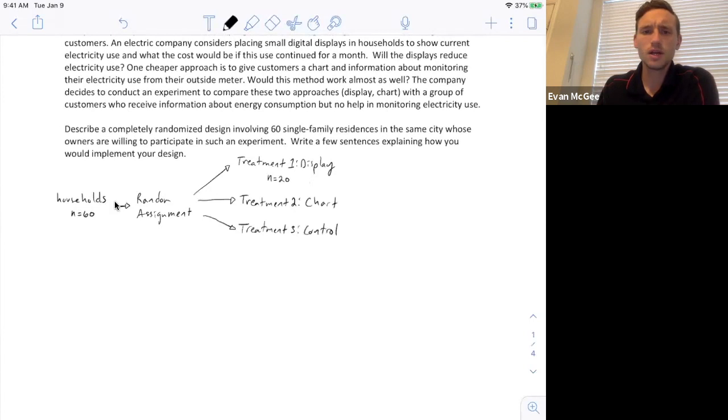So the first step, take our 60 single-family households and randomly assign them to the three treatments that we discussed: the display, the chart, and the control. Now from here we need to talk about what we're going to measure. The response variable that they're measuring is the amount of electricity used. So here we'll talk about what we're going to measure and then we're going to compare the results in the end.